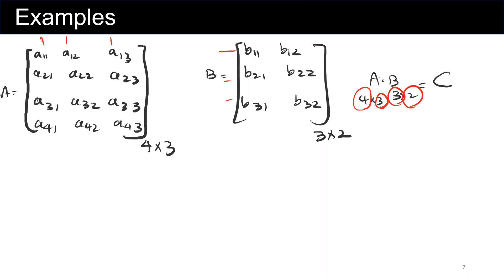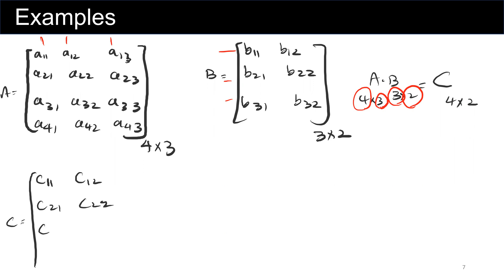The outcome: first we check that the number of columns in A is 3, and the number of rows in B is also 3, so we can multiply them. The result C will be a 4 by 2 matrix, with elements c11, c12, c21, c22, c31, c32, c41, c42.